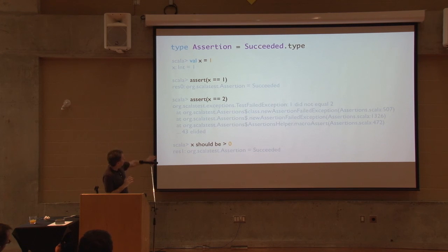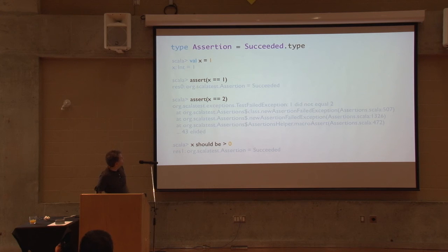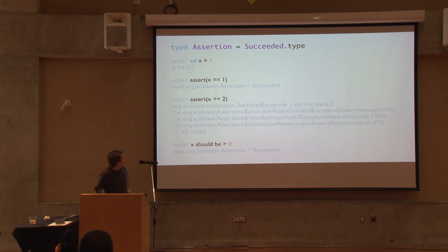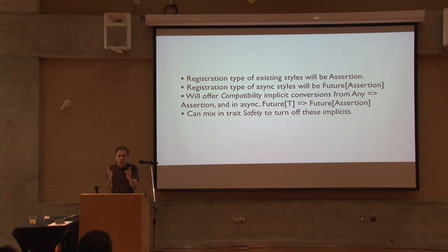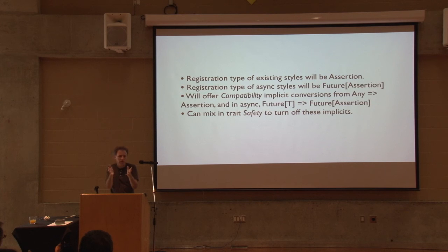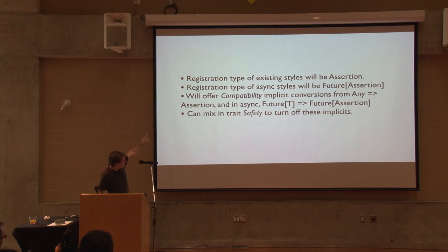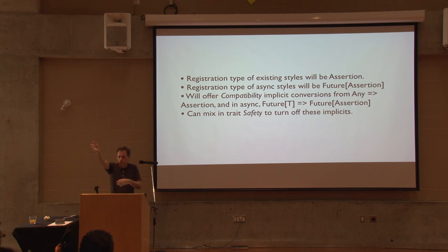I made assert, should, and must return Succeeded instead of the Unit value. What they did before was return the Unit value, which is a singleton. Now they just return a different singleton if it succeeds - but if it fails, it still throws the same exception as before. So: x is one, x equals one is true, I get Succeeded. x equals two is false, so I get TestFailedException: 'one did not equal two' with the stack trace. I will change the type of test in ScalaTest 3.0 from Unit to Assertion. That would break a lot of code, which I'll fix with a compatibility trait that has an implicit from Any to Assertion. In async tests, there's also a conversion from Future of T to Future of Assertion. So you can still end a test with anything.